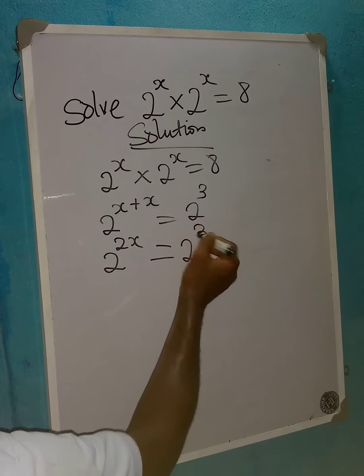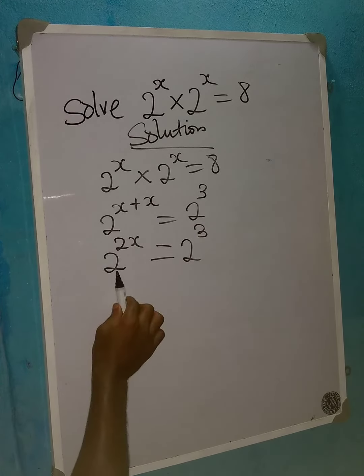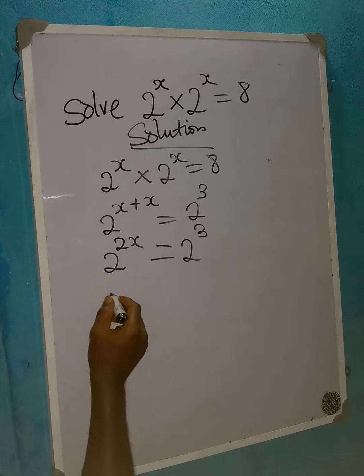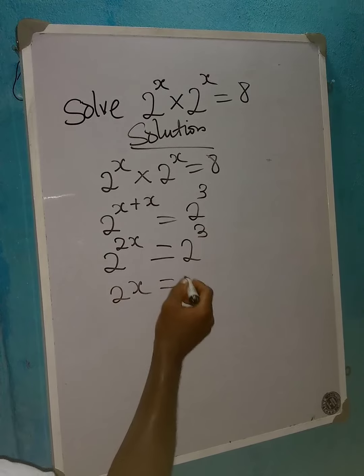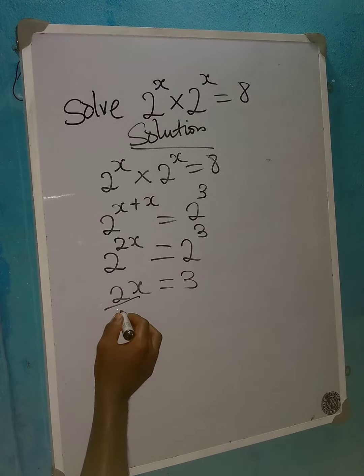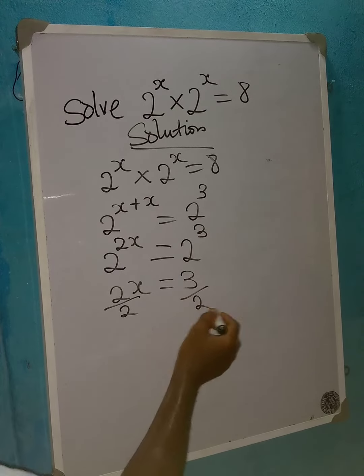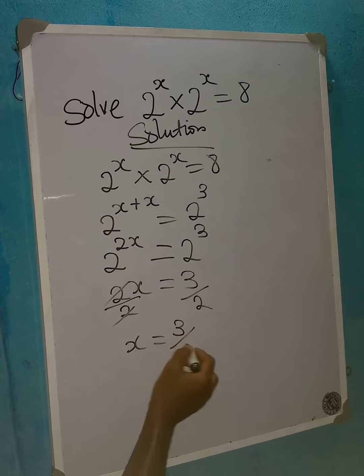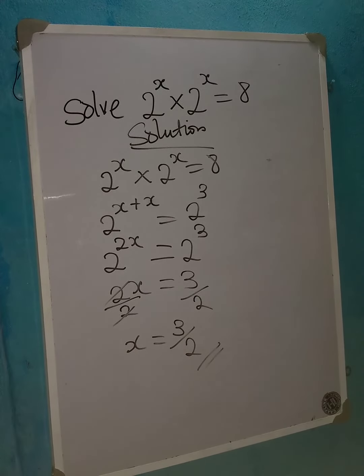Now that the bases are the same, I will equate the powers. So 2x is equal to 3. To get the value of x, I'll divide both sides by 2, and then x will be equal to 3 over 2. Thank you for watching.